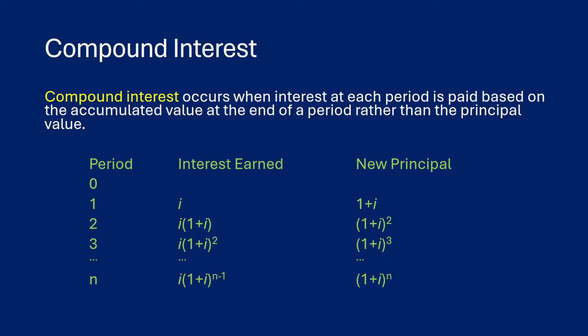Compound interest occurs when you gain interest based on the accumulated value at the end of a period, rather than your principal value like you would for simple interest. So what this means is if we invest one dollar at period zero, we gain i interest in the second period, and our new principal becomes one plus i. Instead of gaining interest based on your initial deposit of one dollar, you're now gaining interest based on your new principal, which is one plus i.